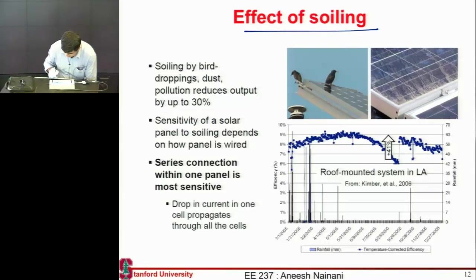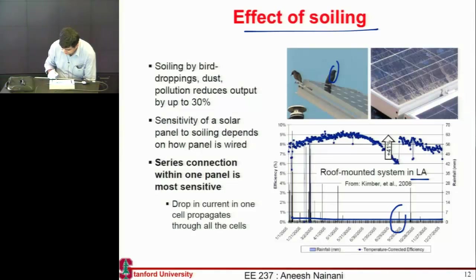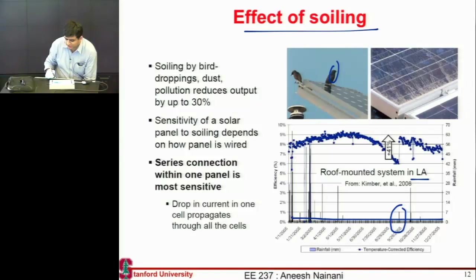This is some experimental data collected for a panel placed in LA over the course of one year. You see that the panel efficiency keeps dropping because of birds pooping on the panel or dust accumulating. Then in mid-fall there's a rain shower, which reduces the soiling effects and cleans it up — you see a roughly 40% increase in efficiency. These are very real effects observed in panels.